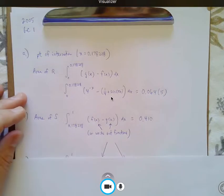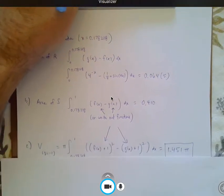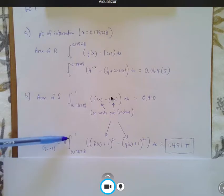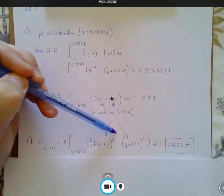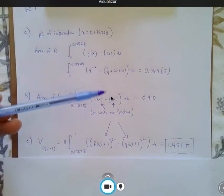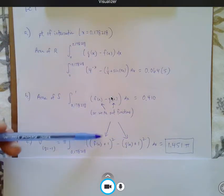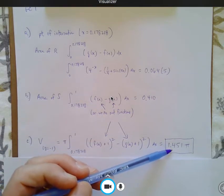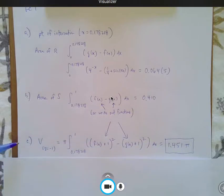Letter C is a pretty standard washer problem. Again, you're adding 1 because you're rotating the solid about the line y equals negative 1. Pi times the integral from the irrational number 0.178218 to 1 of the function plus 1 squared minus the function plus 1 squared, which, of course, you can write the functions out if you want to.